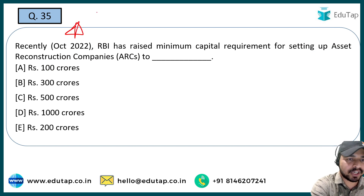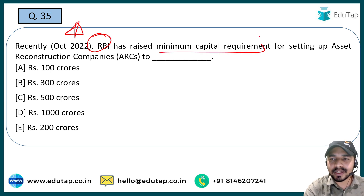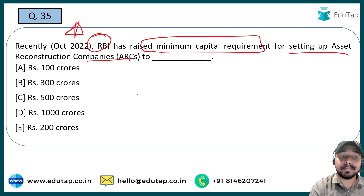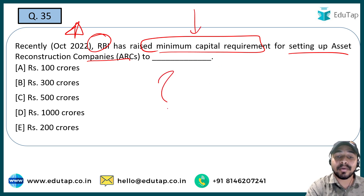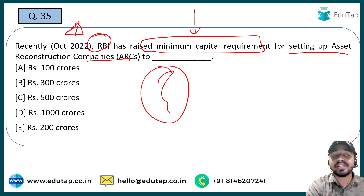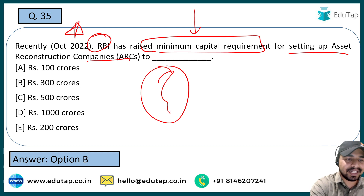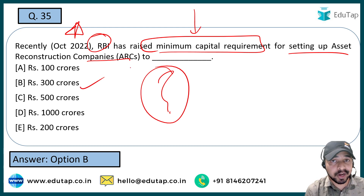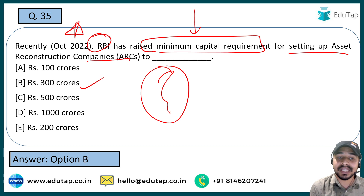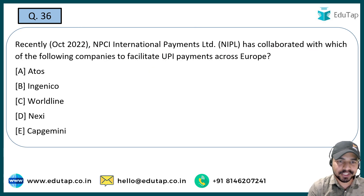The next question is a very important one. RBI has raised the minimum capital requirement for setting up Asset Reconstruction Companies. What is that minimum capital requirement amount? The right answer is ₹300 crores. So the minimum capital requirement needed to set up an Asset Reconstruction Company is basically ₹300 crores.